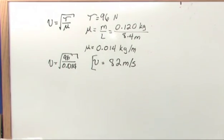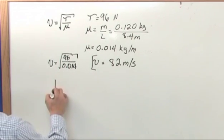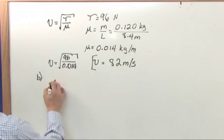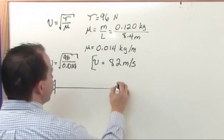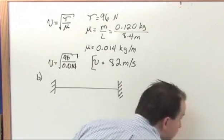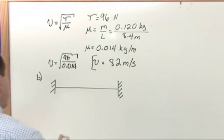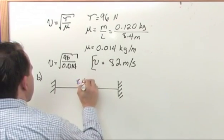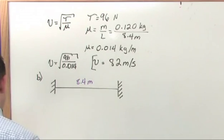The second part of the problem says: what is the longest wavelength possible for a standing wave on this string? Well, we know that the string is between two fixed support structures and it's 8.4 meters long.